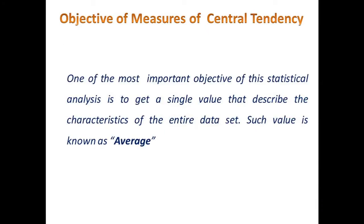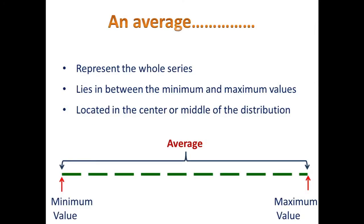One of the most important objectives of statistical analysis is to get a single value that describes the characteristics of the entire dataset, and that value is known as average. An average reduces the complexity of the dataset into a single typical figure to enable scientists to get a bird's eye view about the prominent features of the study. An average represents the whole series and lies in between the minimum and maximum value, located in the center or middle of the distribution.